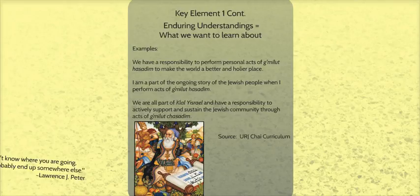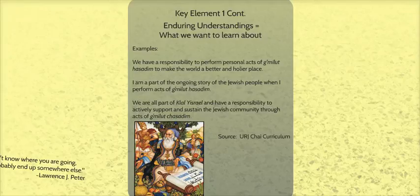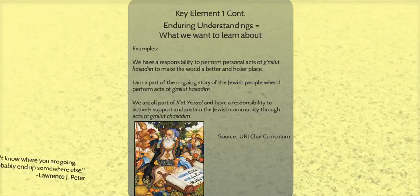Enduring understandings express what we want to learn about. Here are three examples of enduring understandings found in the URJ CHI curriculum, which is also UBD. The first EU is about the big idea of Tikkun Olam and Gemilut Chassidim for first or second graders. The second and third EUs are for older elementary students. As you read these EUs, think of them as goals or outcomes for your students. What kinds of questions need to be asked and investigated in order for the students to really grapple with the proposition in the EU?